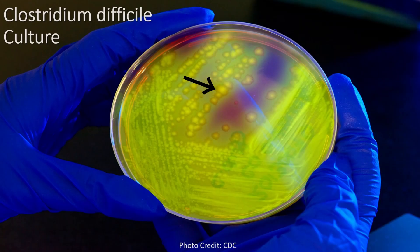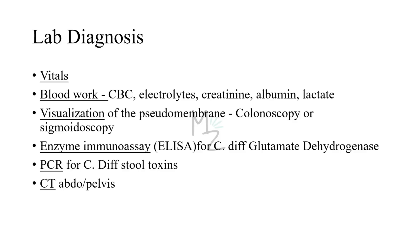Vital signs can reveal fever and hypotension. Blood work including CBC, electrolytes, creatinine, albumin, and lactate is obtained — CBC checks for leukocytosis. Visualization of pseudomembranes via colonoscopy or sigmoidoscopy is also used. Two types of tests detect C. difficile: an ELISA test using antibodies to detect the exotoxin itself, and a PCR assay to detect the toxin-encoding genes. CT scan of abdomen or pelvis may also be performed.